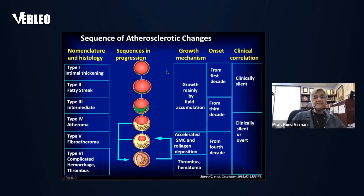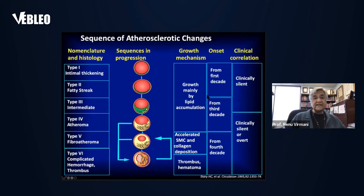How does this growth occur and what happens to the human being? Growth mechanism is mainly thought to be through lipid accumulation, which leads to acceleration of smooth muscle cell and collagen deposition, and finally the stage of thrombosis. The onset is in the first decade through lipid deposition, followed from the third decade onwards by pathologic intimal thickening, fibroatheroma, and thick cap. From the fourth decade onwards we start seeing complications — clinically silent, clinically overt, and with manifestations.